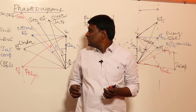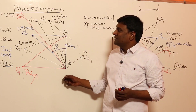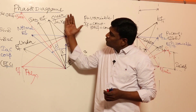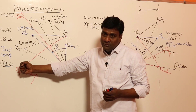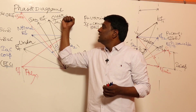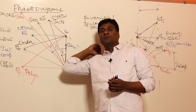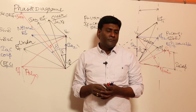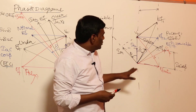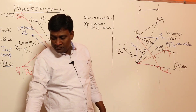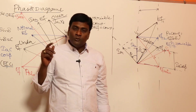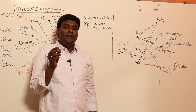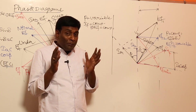The phasor diagram drawn for the generator case and the one drawn for the motor case follow the same logic — flipping the orientation gives you the motor from the generator. These phasor diagrams, though they may seem complex, are fundamental.